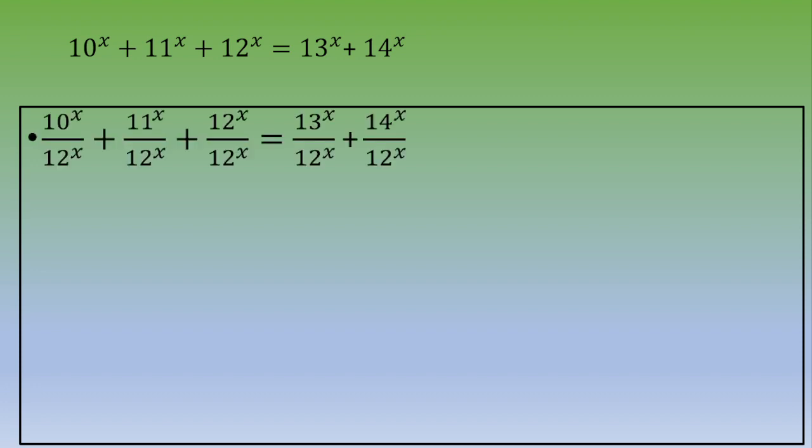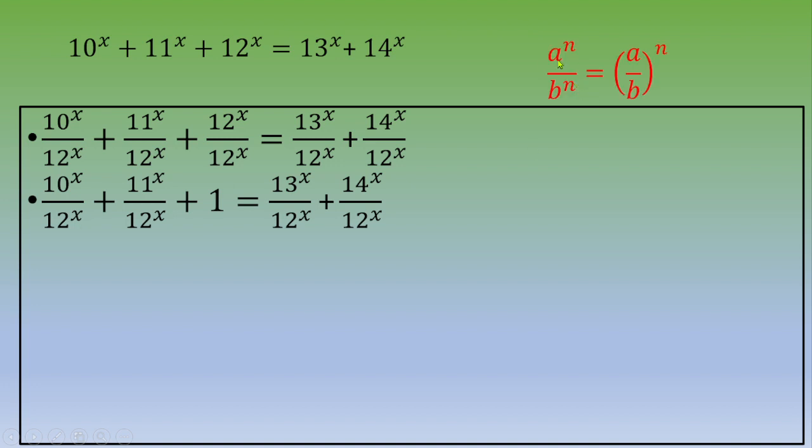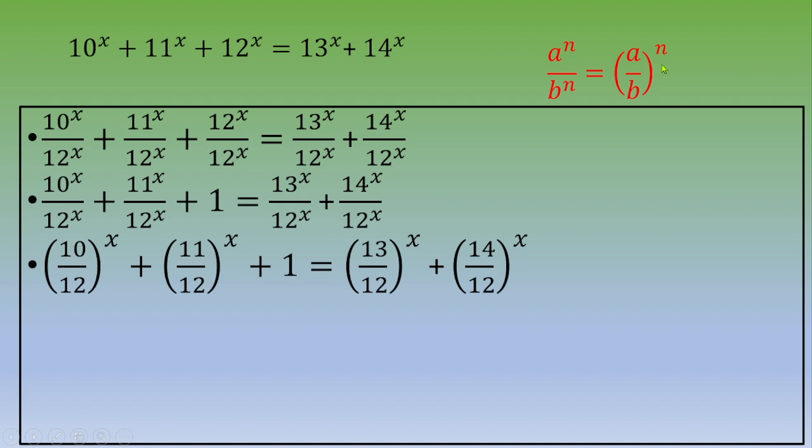We can notice that the third term is 12^x divided by 12^x, and this is 1. All the other terms can be written as a^x divided by b^x. We know this rule: every time you've got a^n divided by b^n, this is (a/b)^n.